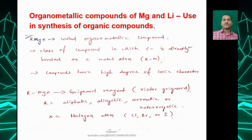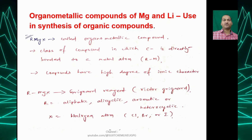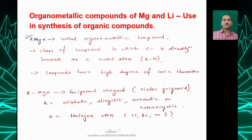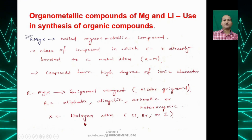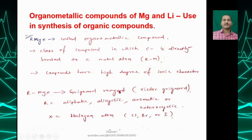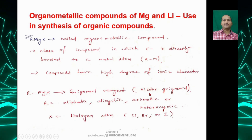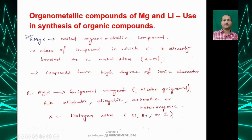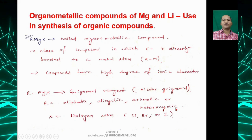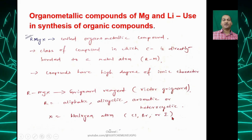These compounds have a high degree of ionic character. The first example, RMgX, is known as Grignard reagent, discovered by scientist Victor Grignard. Here R is an aliphatic, acyclic, aromatic, or heterocyclic group, and X is a halogen atom — chlorine, bromine, or iodine.